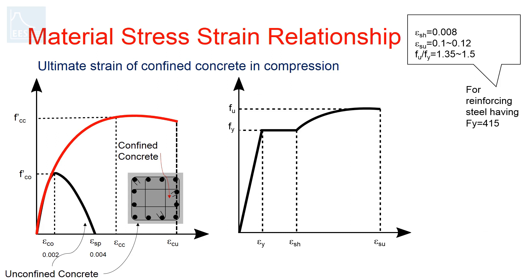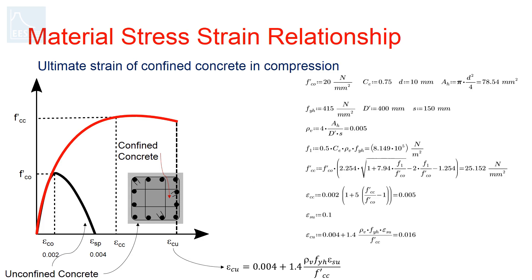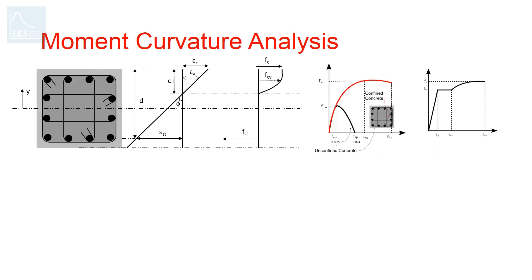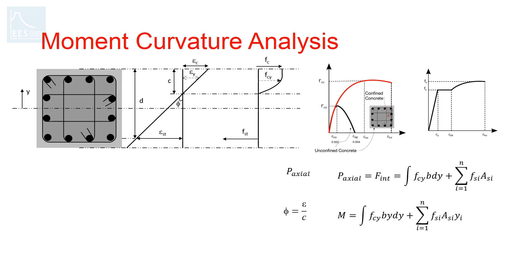The ultimate strain in confined concrete can be calculated using this equation. For example, for a rectangular section with 20 MPa unconfined stress, a confined core length of 400 mm, and transverse reinforcements of diameter 10 mm at a spacing of 150 mm, the ultimate strain of confined concrete would be 0.016 with a confined stress of about 25 MPa at a strain of 0.005. Once the stress-strain relationships for concrete and reinforcing steel are selected, we can perform the analysis applying equilibrium and compatibility conditions.